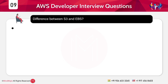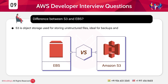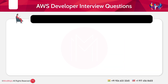Question 9: What is the difference between S3 and EBS? Answer: S3 is object storage used for storing unstructured files — ideal for backups and media. EBS, on the other hand, is block storage used as a virtual hard drive for EC2 instances, offering low-latency access and persistent data.